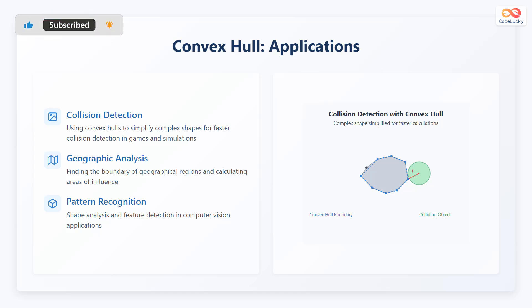Convex hulls can be used for finding the boundary of geographical regions and calculating areas of influence. The third application is pattern recognition. Convex hulls can be used for shape analysis and feature detection in computer vision applications.